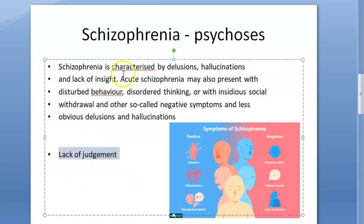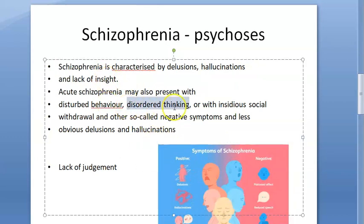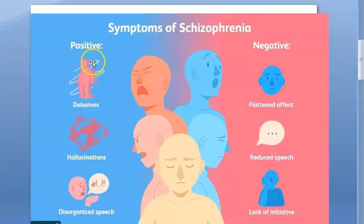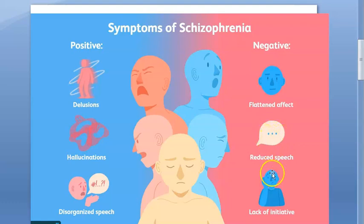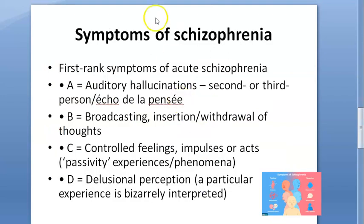These people present with disturbed behavior, disordered thinking, and social withdrawal - all of these are negative symptoms. What is positive? There is something extra in these people - delusion and hallucination are extra. So positive symptoms include delusions, hallucinations, and disorganized speech. Negative symptoms include reduced speech, lack of initiative, flattened affect, and social withdrawal.